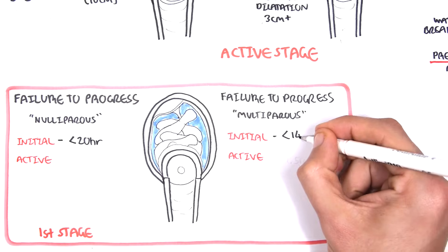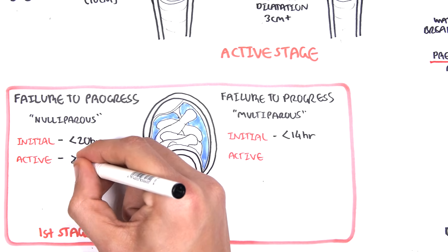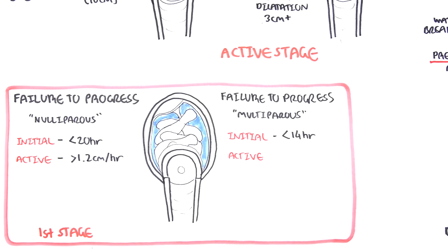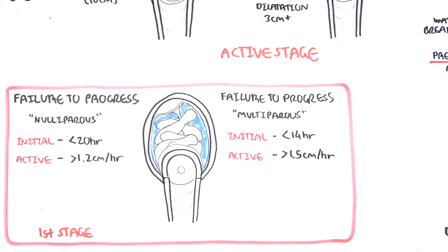For multiparous women, the initial phase would be no longer than 14 hours. So you can already tell that multiparous women are a lot quicker because this is their second or third or fourth pregnancy. Now for the active phase, which starts once the cervix is 3 cm dilated, the dilatation of the cervix is usually at a rate of at least 1.2 cm every hour for a nulliparous woman. However, for a multiparous woman, this is a lot faster, more than 1.5 cm per hour. And if it is a lot slower than this, it might indicate failure to progress and interventions might be needed.